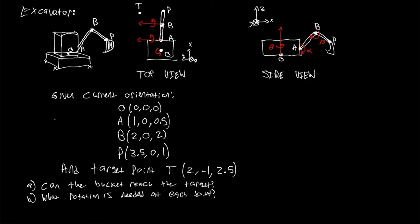Here's the problem statement — feel free to pause the video to copy this down. We have an excavator. We're given a top view and a side view. The current orientation gives points O, A, B, and P. Point O is the origin and center of rotation of the cab. Point A is where the arm links to the cab. Point B is another link along the arm, and point P is where the bucket is attached at the end.